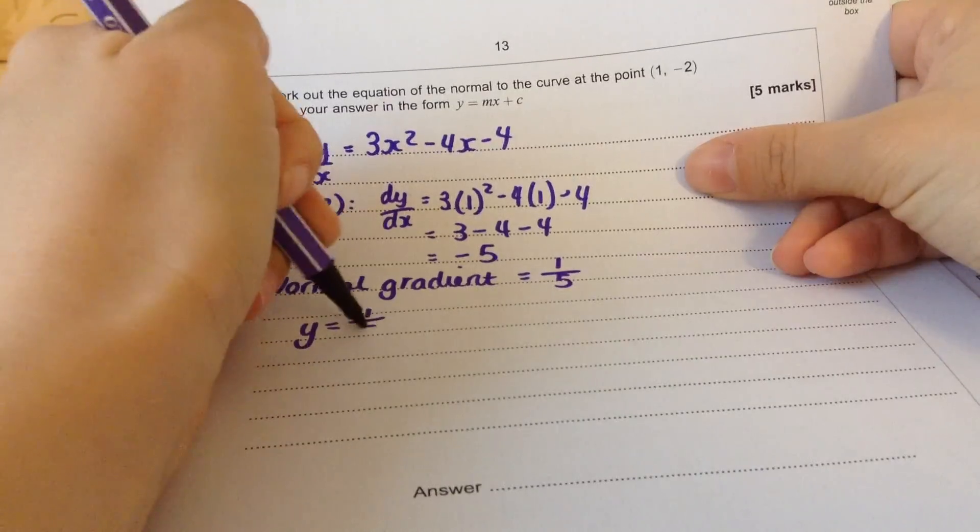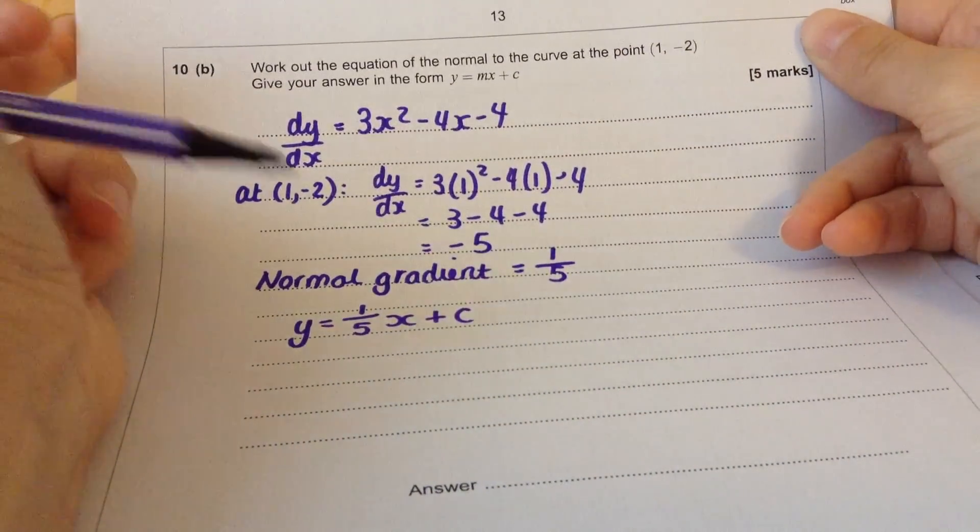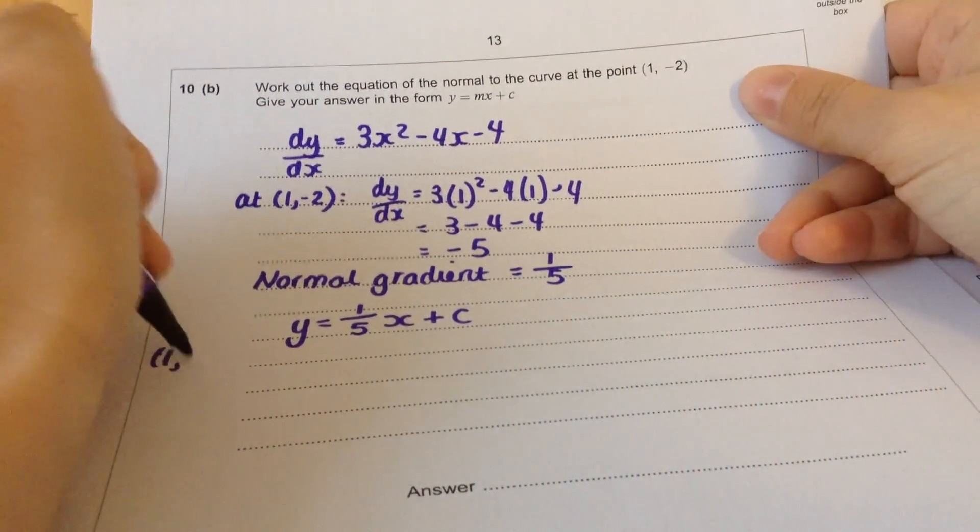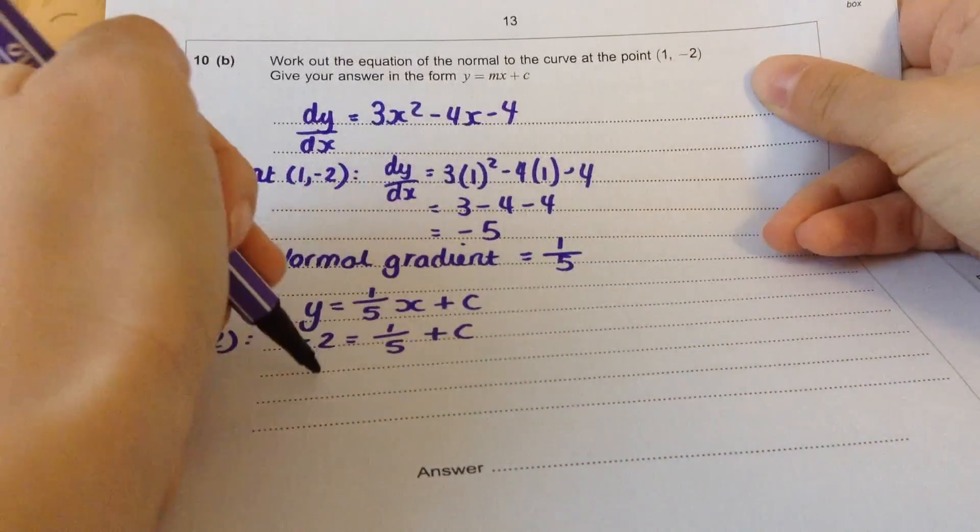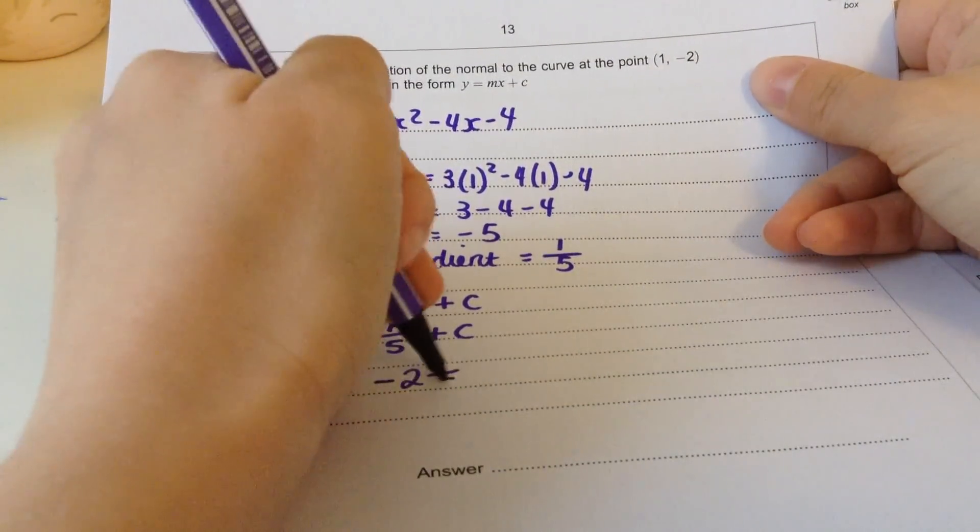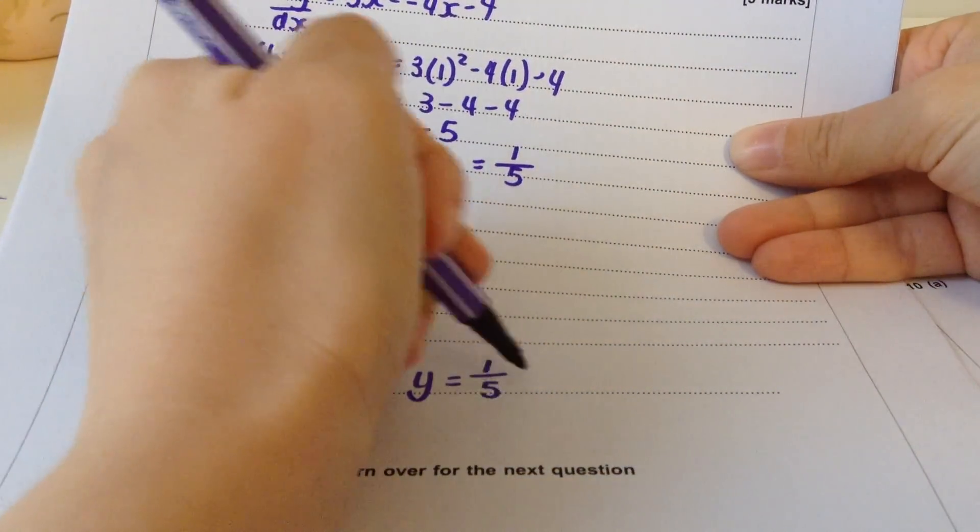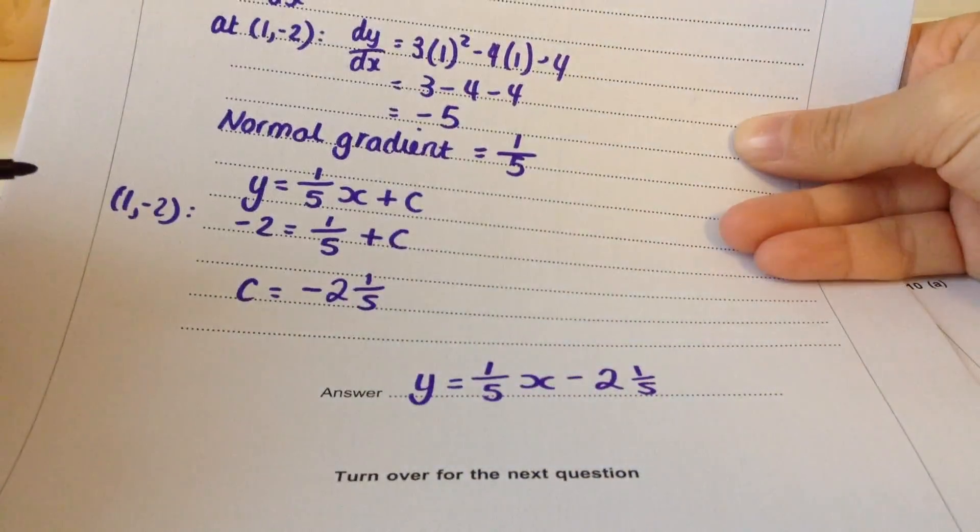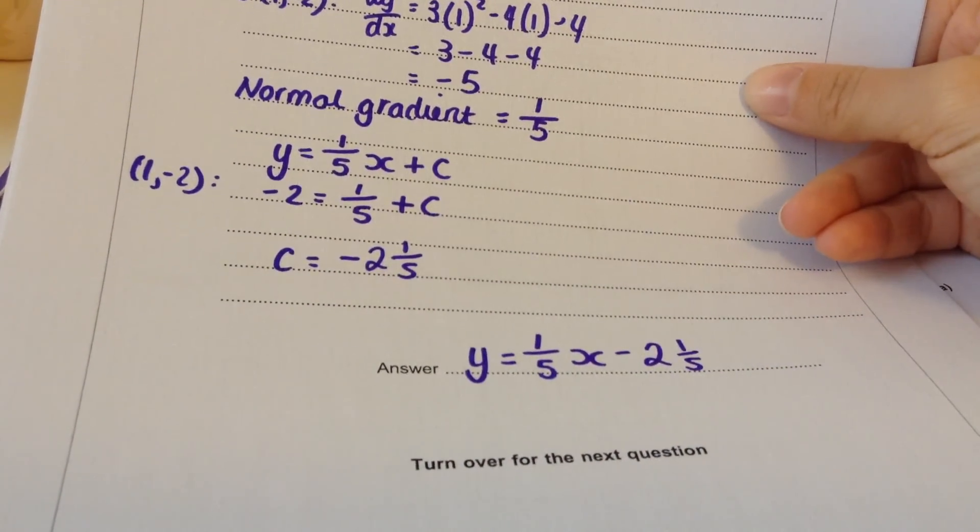So I know it's y equals a fifth x plus c. Then we just need to substitute in a point that lies on this line to get c. So we'll substitute 1, -2. Minus 2 equals a fifth of 1 plus c. So c equals minus 2 and a fifth. So y equals a fifth x minus 2 and a fifth. In decimals would be fine as well.